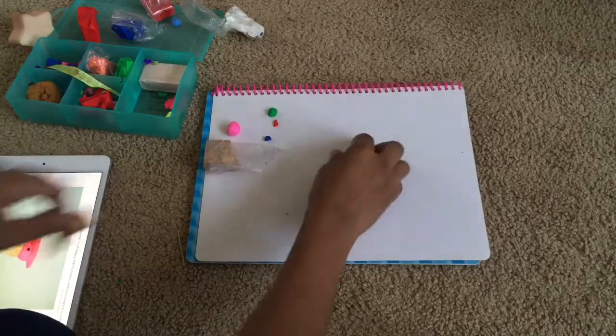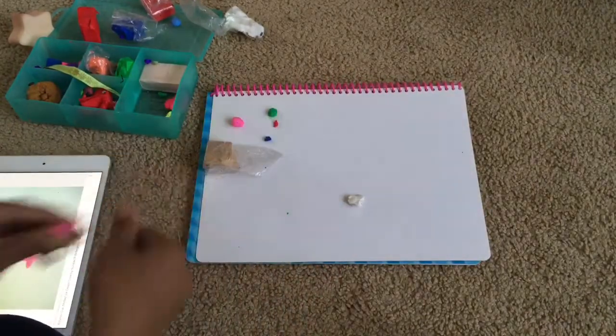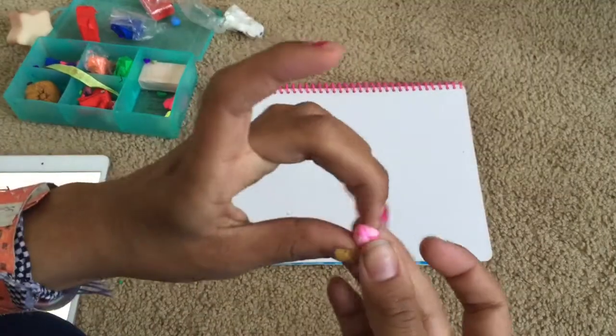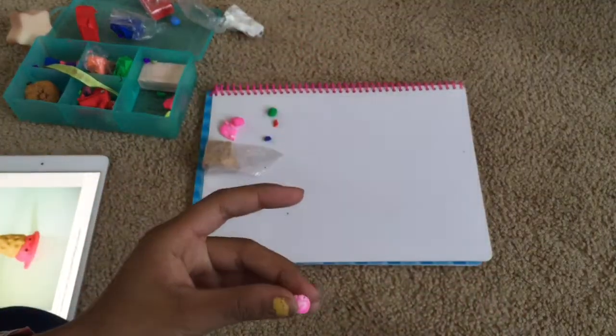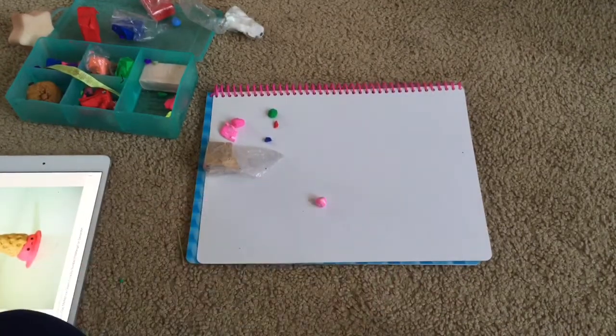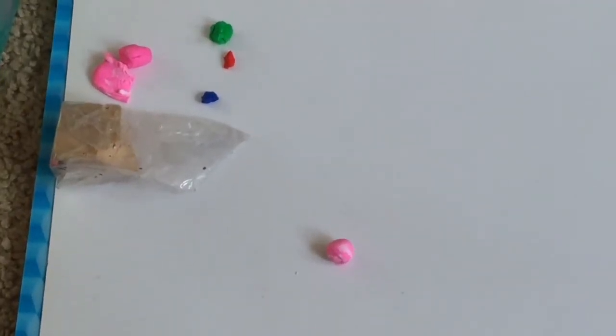You have to bake it in the oven for about 10 to 15 minutes. So what you're going to do right now is smash the little clay into each other for it to look like this strawberry shortcake, white and pink mixed together.